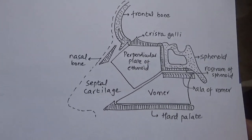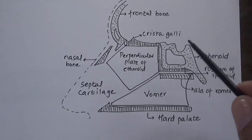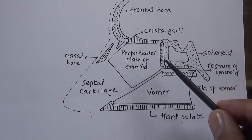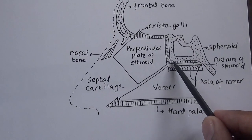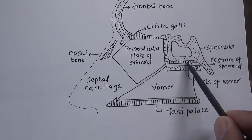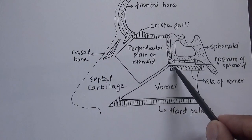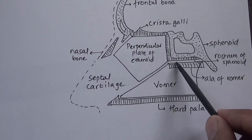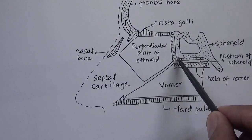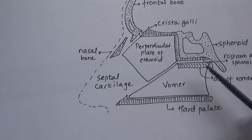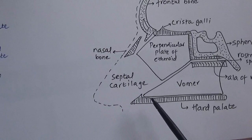Let me show you another diagram. Here you can see the Vomer with the bones it is related to. Above, there is the sphenoid — this is the body of sphenoid. The elevated portion on the inferior border of the body of sphenoid is the rostrum of sphenoid. The diverging alae are related to the body of sphenoid, and the superior border is attached to the rostrum of sphenoid.